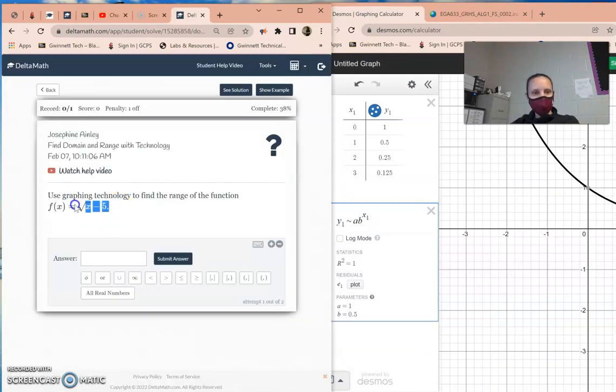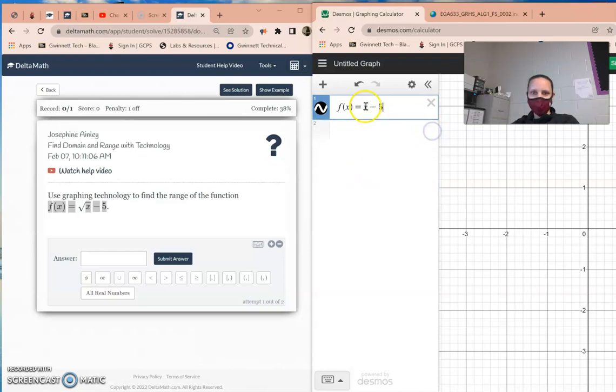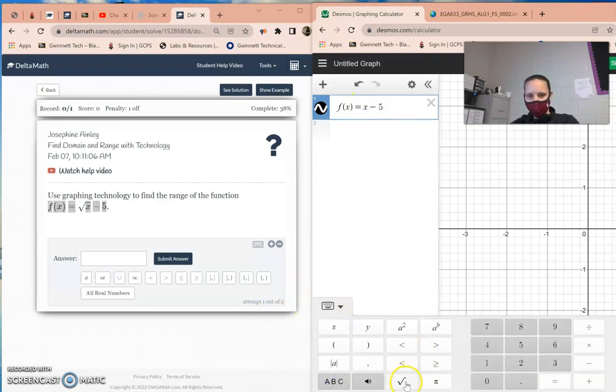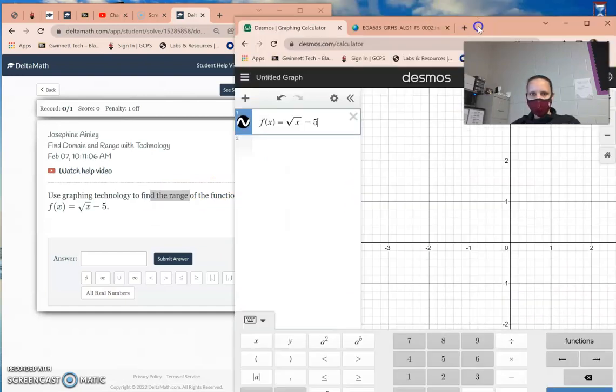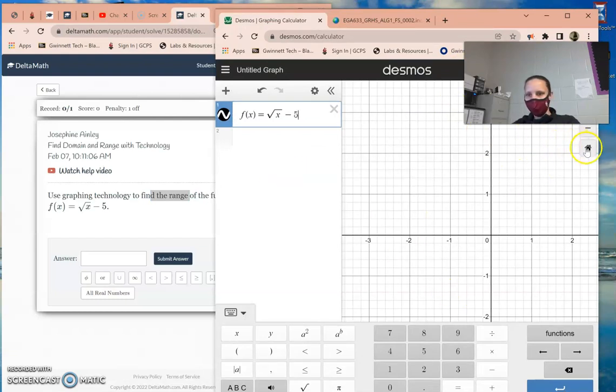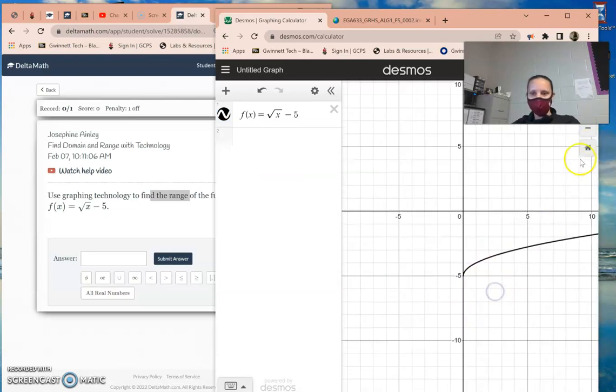Find domain and range with technology. So let's go ahead and control c, and then control v, and then kind of change it up. Control x will cut. Control v will paste. Control x will cut. Control v will paste. But that doesn't look the same. I need to put a square root. So I'm going to go here, put the square root, and inside that needs to be the x. So just make sure that you've copied down exactly what it looks like. Range is bottom to top, right? It's your y values. And then domain is your x values.